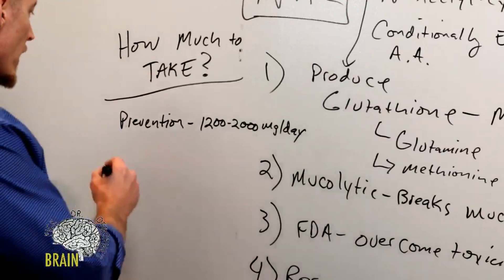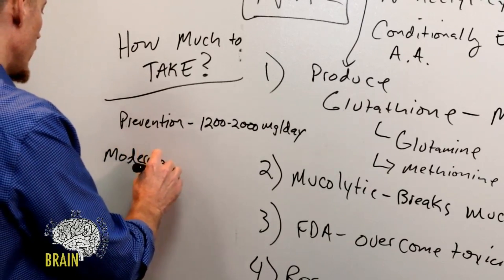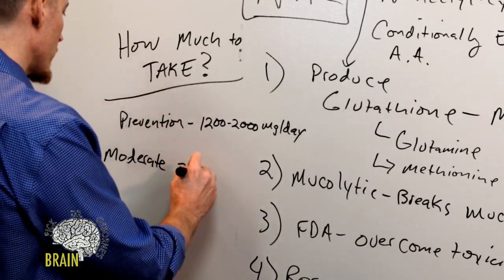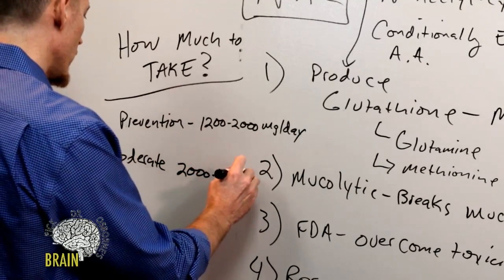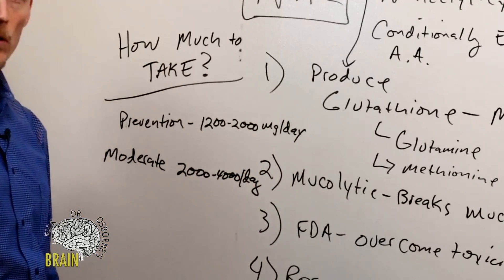Now for a more aggressive moderate dose, if you think you're coming down with something, somewhere between 2000 and 4000 per day. And if you're full-blown in bed with a super illness...